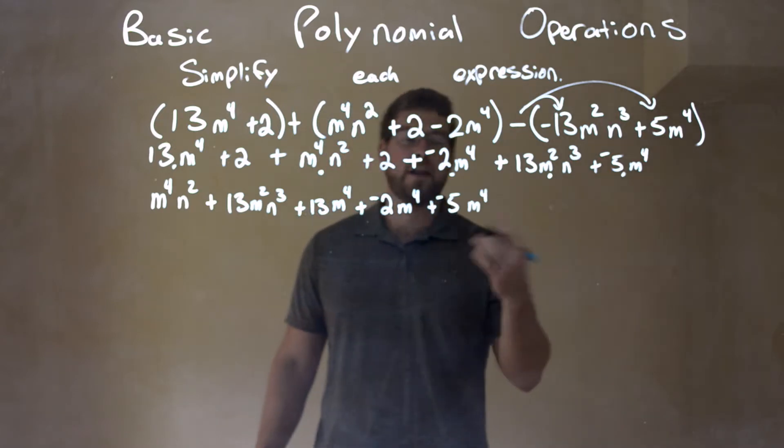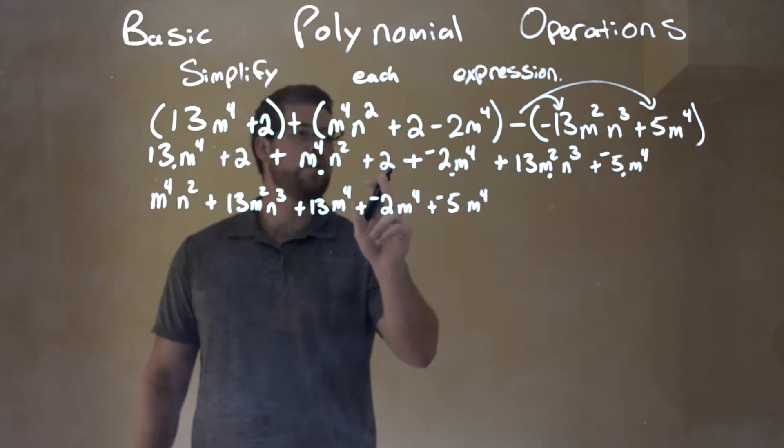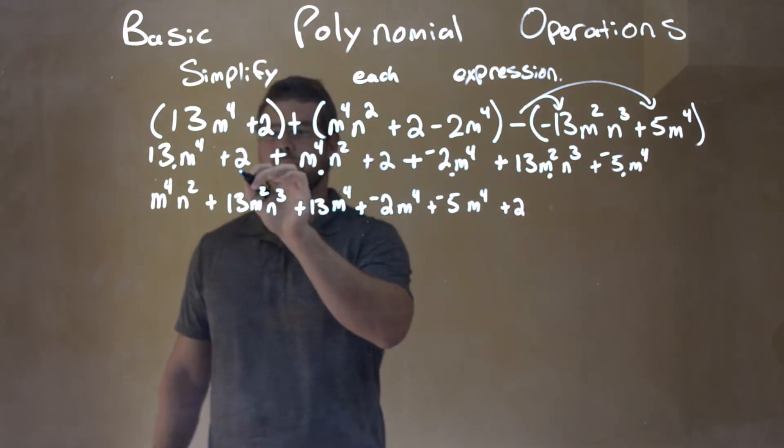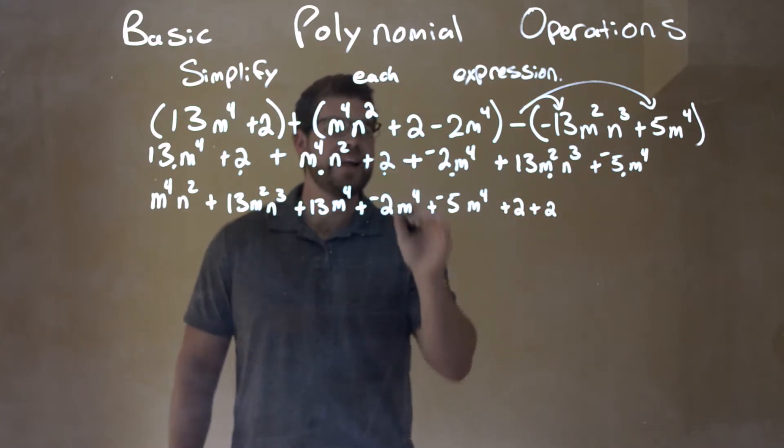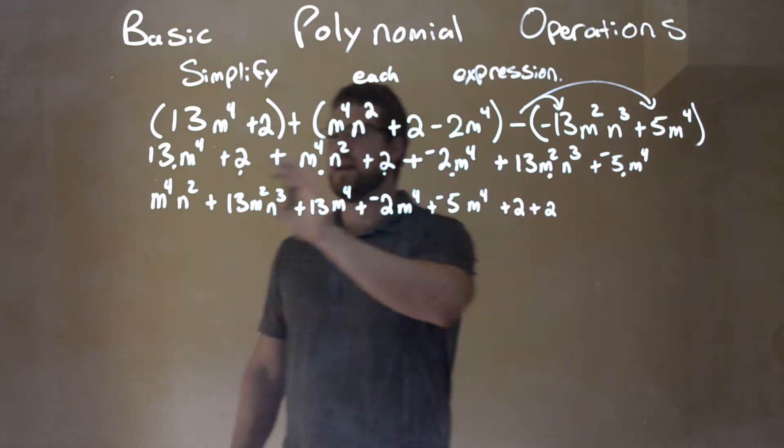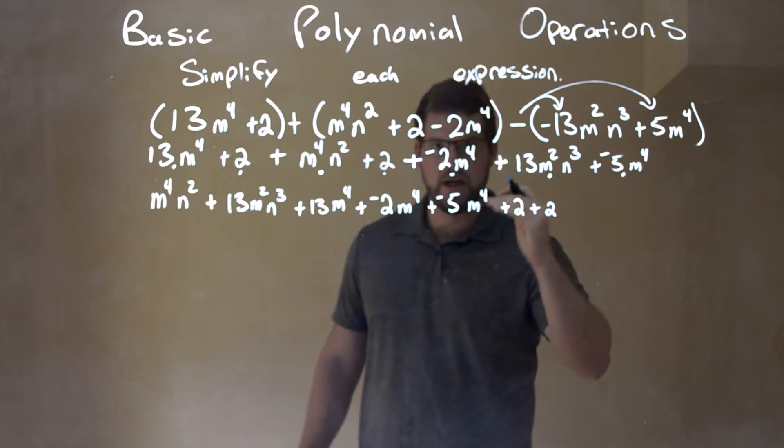Next thing I'm not forgetting, I need to bring down my constants. Last two ones are the 2s right here. We have one 2, bring that down, and plus another 2. Bring that down. I definitely recommend taking your time with this. Putting your dots where they need to be and slowing down. Make sure everything comes down.